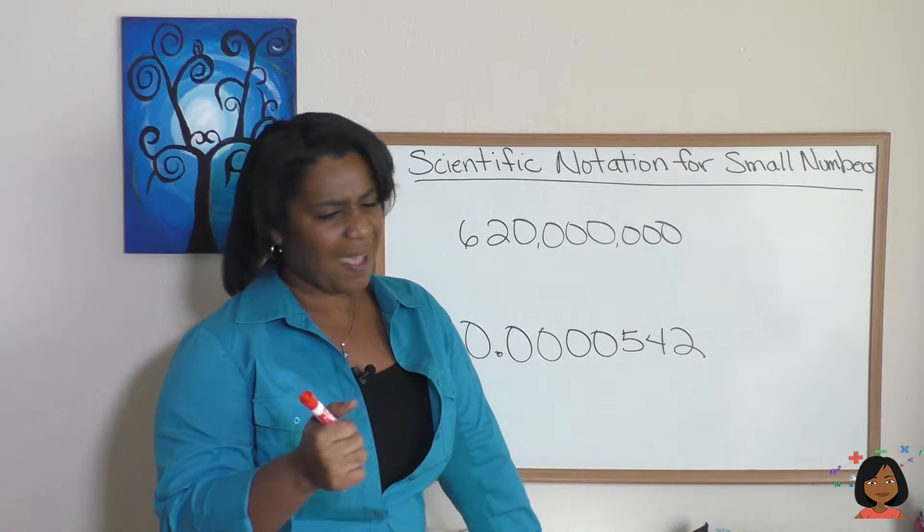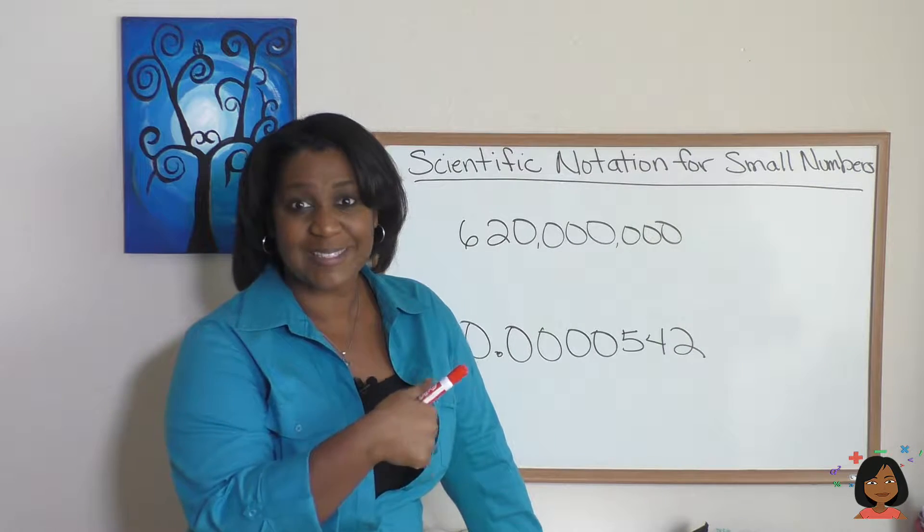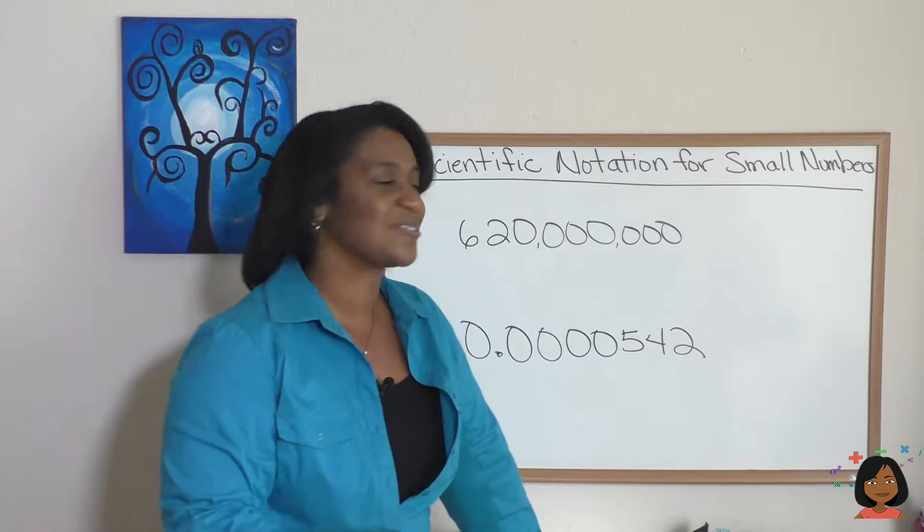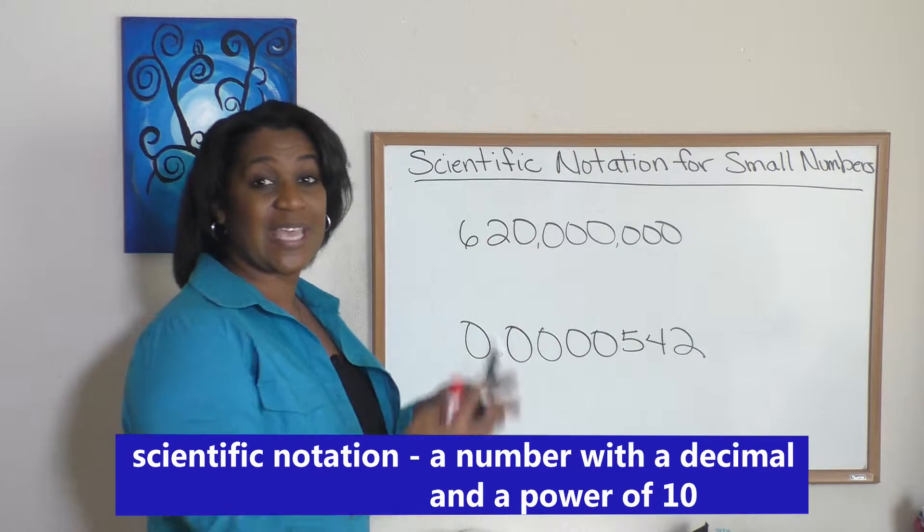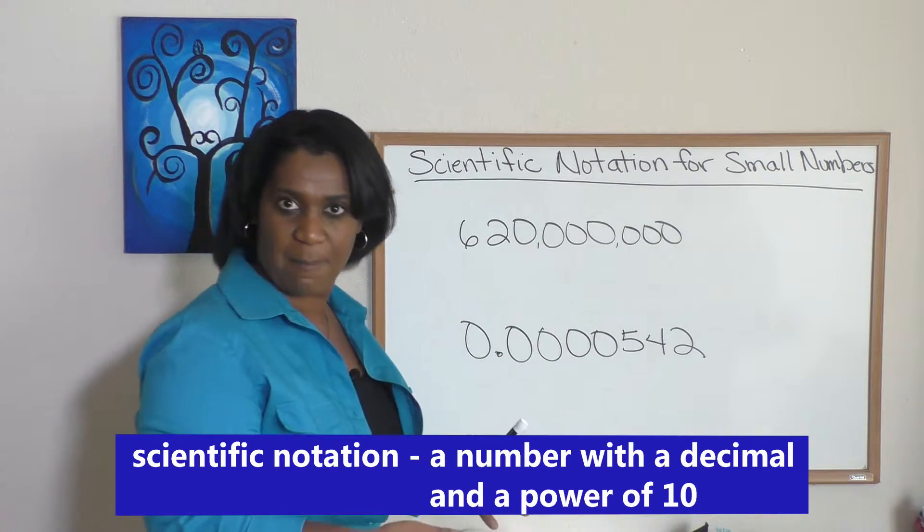We've already done big numbers. Let's review that really quickly and then I'll teach you about small numbers. If you remember, scientific notation for big numbers is when we use a decimal and a power of 10 to write our number. It just makes our life easier instead of writing all these zeros.